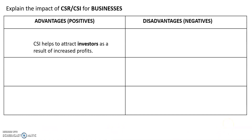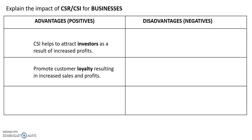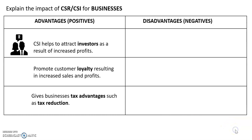The three easiest facts for the positives are: CSI helps to attract investors as a result of increased profits; it promotes customer loyalty resulting in increased sales and profits; and it gives businesses tax advantages such as tax reduction. If we combine this to pictures, you can see people or investors looking for some way to invest. The little hand shows availability, the heart shows that customers like it and will buy from your shop, and the scissors show that the tax is cut — that is tax reduction.